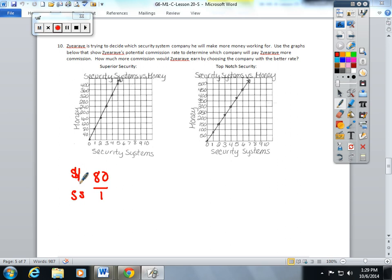Here, for every one security system that he makes, halfway between $50 and $100 is $75.